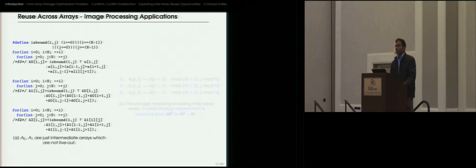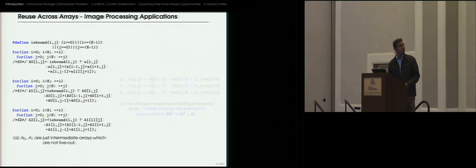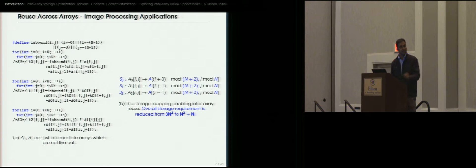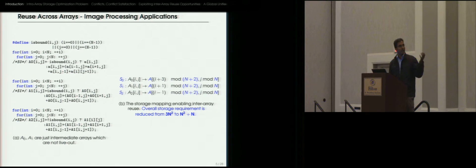That was an example of intra-array reuse. Here's an example of an image processing pipeline where there is some scope for inter-array reuse, that is reuse across different arrays. This is basically a sequence of loop nests, each applying a stencil. The arrays A0 and A1 written by statements S0 and S1 are just temporary buffers, and they can be dispensed with as long as the result is available in array A2 at the end. Using the storage mappings shown here, all statements S0, S1, and S2 will write to the same array A, which is an n+2 × n array, reducing overall storage from 3n² to n²+2n.